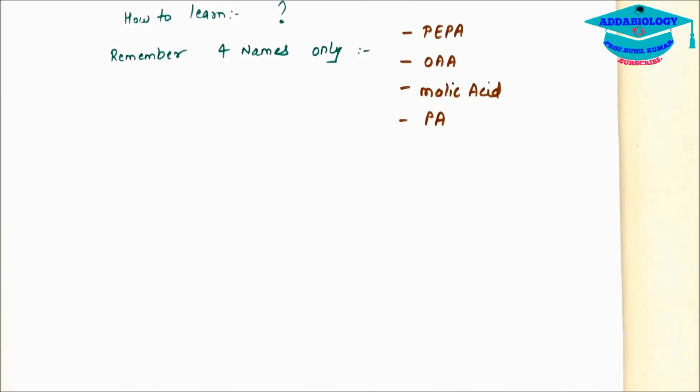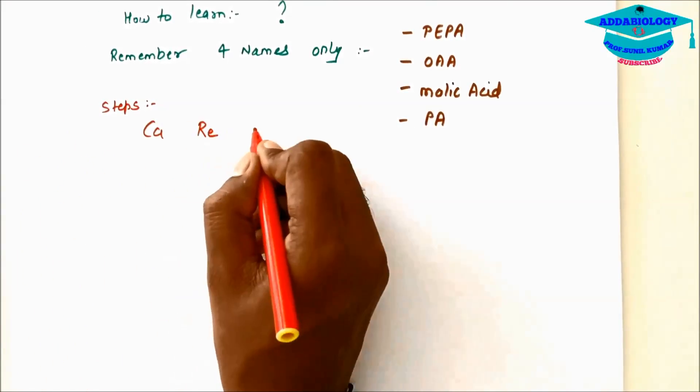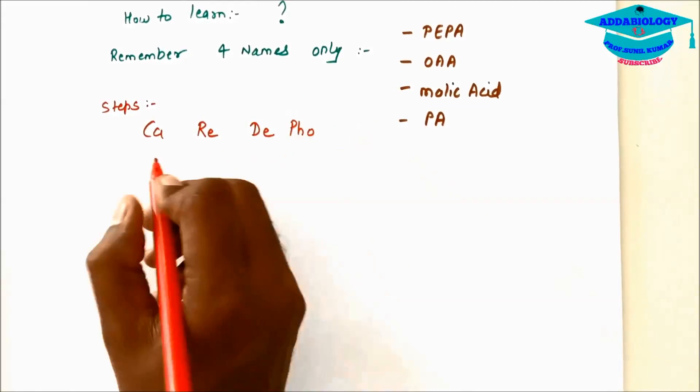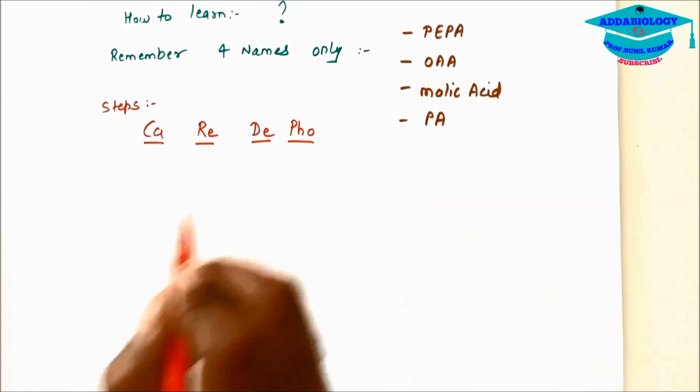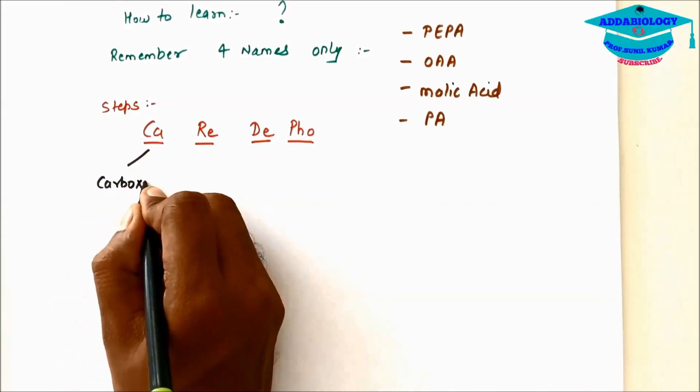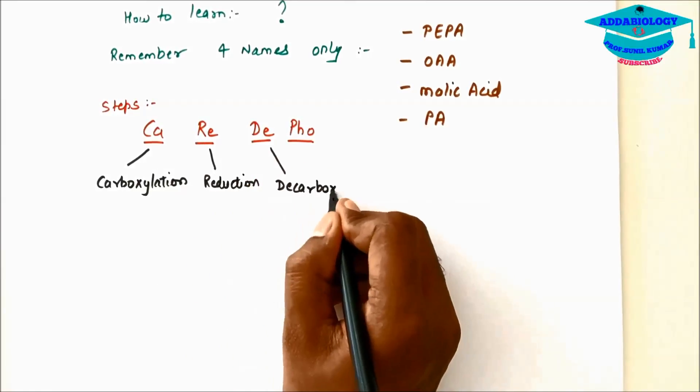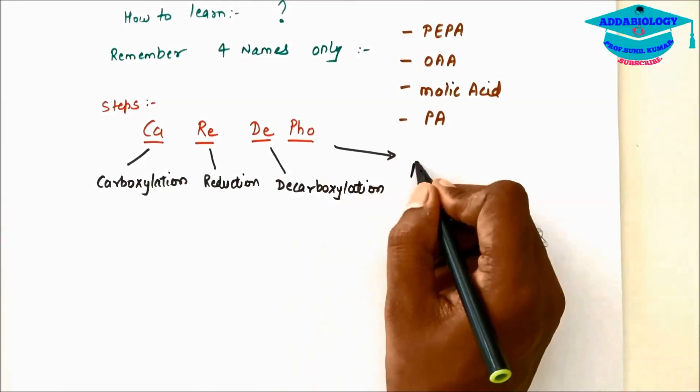What are the steps? First step is carboxylation, CA, reduction, RE, decarboxylation, DE and phosphorylation, PHO. So it is CARIDEFO. Carboxylation, reduction, decarboxylation and phosphorylation.